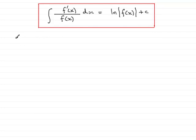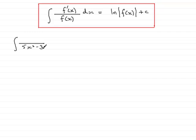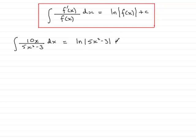Let's take the first example. Suppose we've got a fraction with denominator 5x squared minus 3 — so that is our function of x. If I differentiate this, I get 10x. If the numerator is 10x, then this is a natural log type, and it must have resulted from differentiating the natural log of the denominator. So the integral is the natural log of the mod of 5x squared minus 3, plus c.